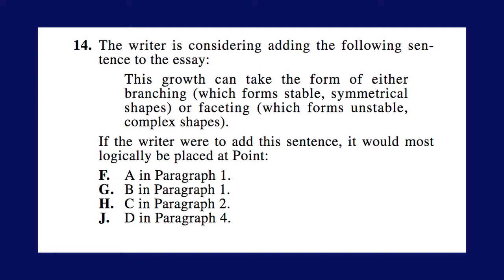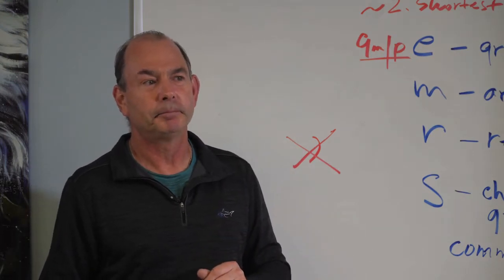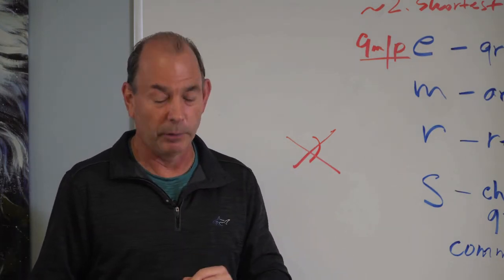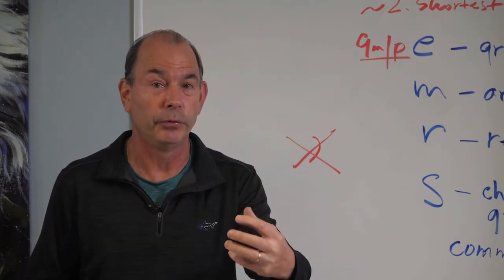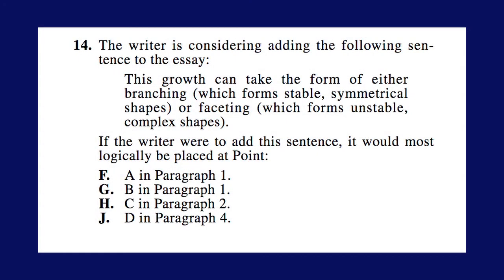And then it says, if the writer were to add this sentence, it would most logically be placed where? What are the two key words in the question? It'll be in the sentence that they ask you to place in the essay. This growth can take the form of either branching. Think about it. What are the most important two words in that question? I think you would get it if you think about it for a second.